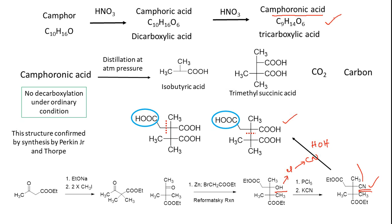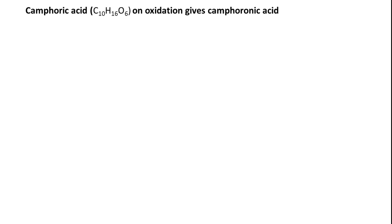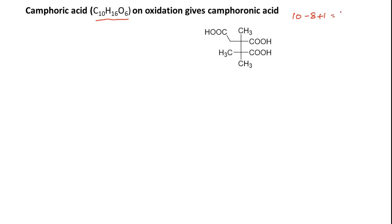Now let us move to the structure of camphoric acid. Its molecular formula is C10H16O4, and upon further oxidation it gives camphoronic acid. Calculating unsaturations: 10 − 8 + 1 = 3. Since camphoric acid is a dicarboxylic acid — 2 carboxylic acid units accounting for 2 unsaturations — the remaining 1 unsaturation is due to one ring.